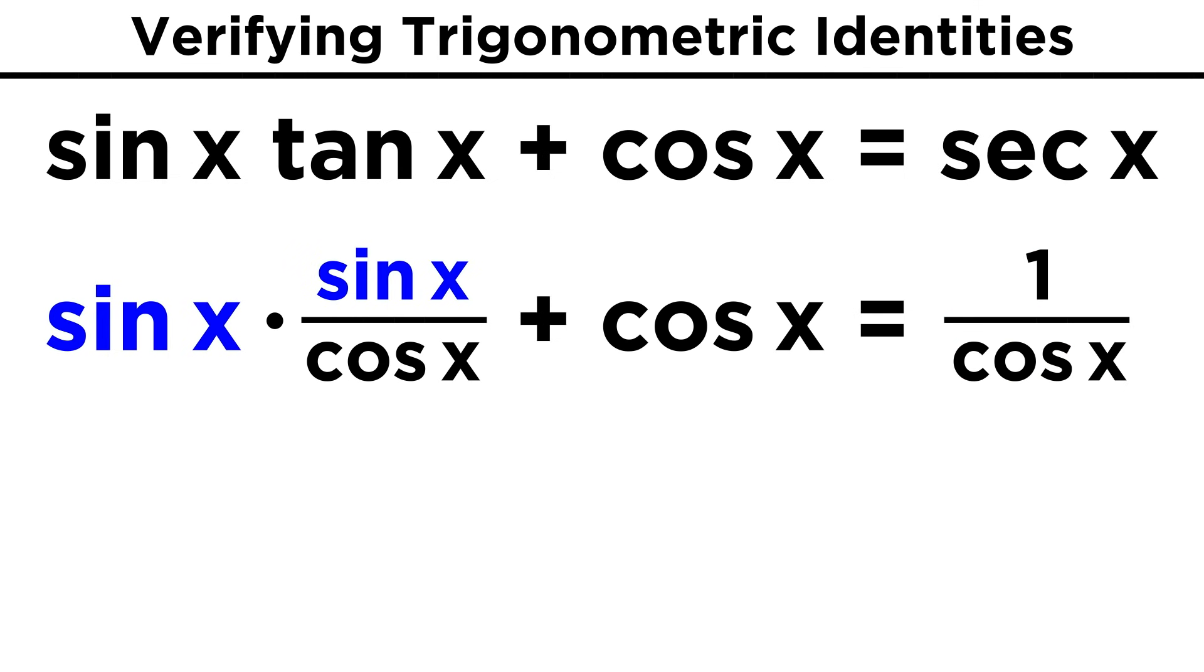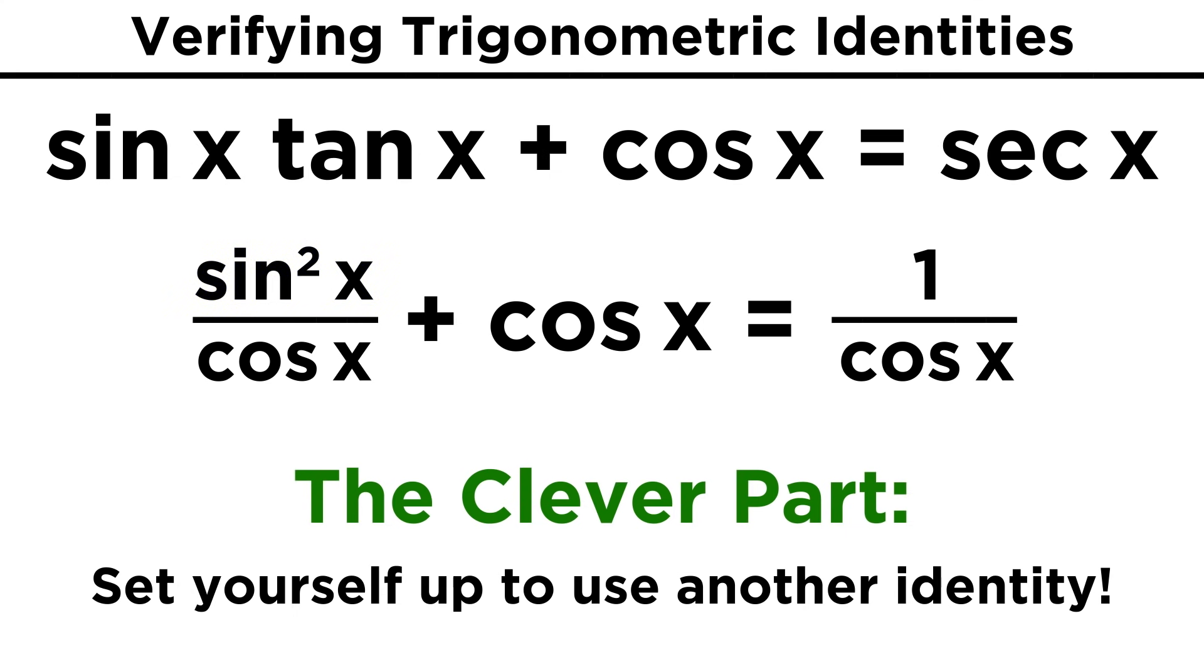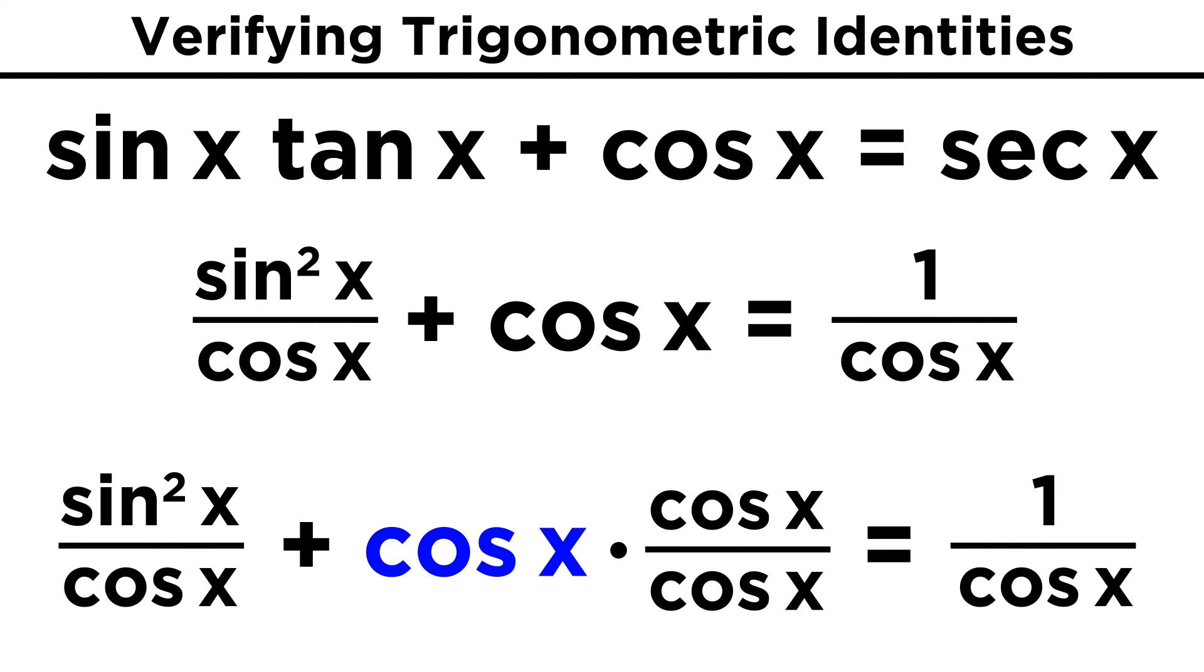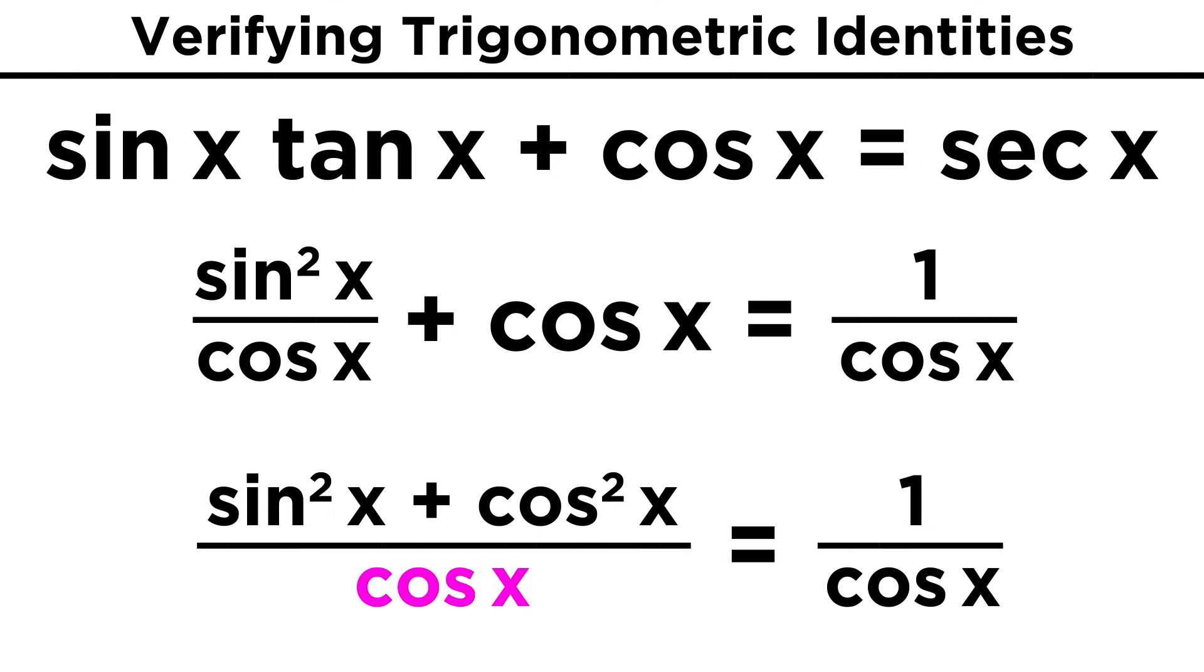Now the sine x terms multiply to get sine squared x. Here's the clever part, the part that can be frustrating when you can't figure out what to do. If we multiply this cosine x by cosine over cosine, it becomes cosine squared over cosine. That may seem arbitrary, but we do this so that we can combine the fractions, giving us sine squared plus cosine squared over cosine.